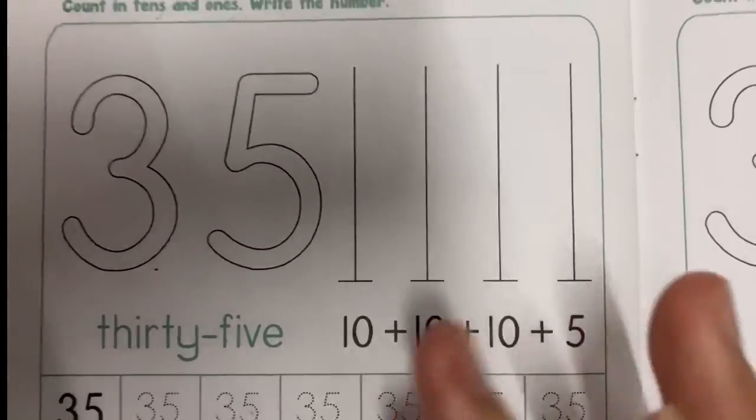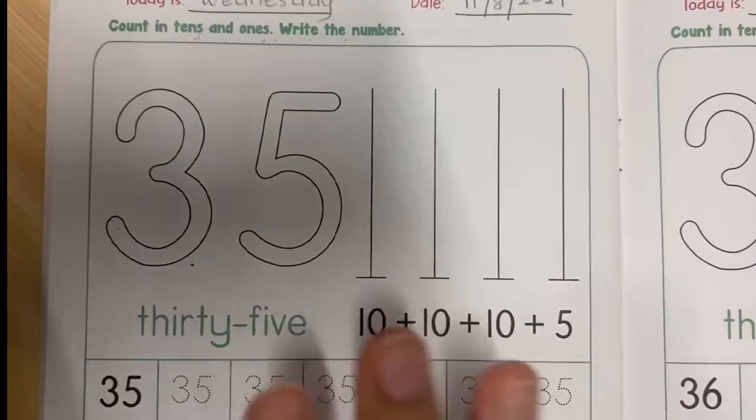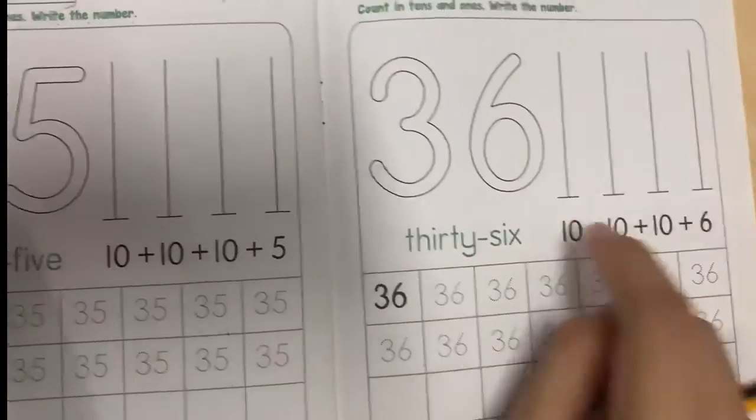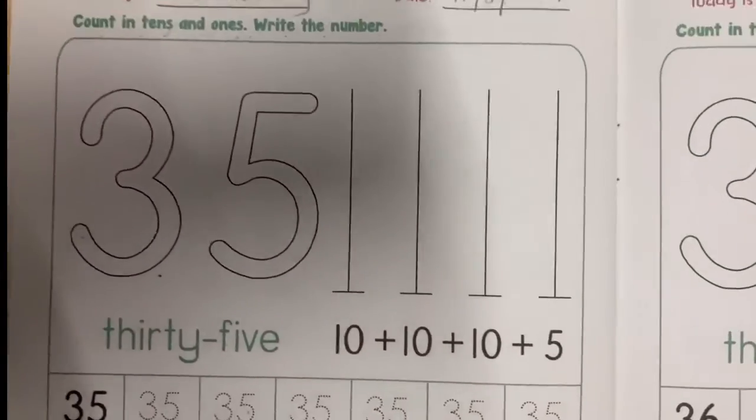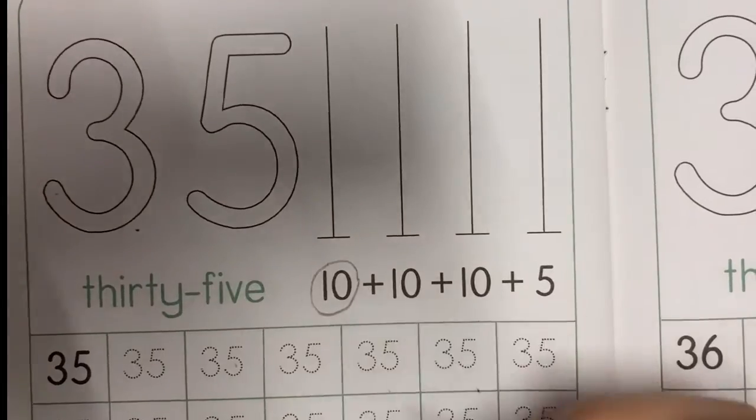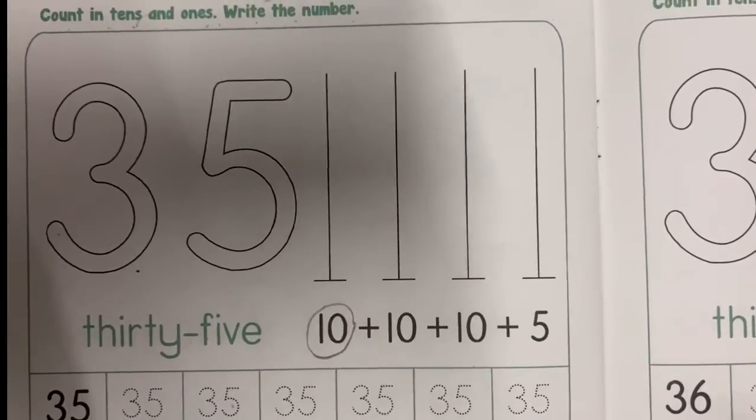I'll give you an example with number 35, and then you do with your mama and papa number 36. Okay, let's see number 35. This one is number 10. How many bubbles we need to draw?